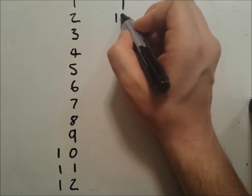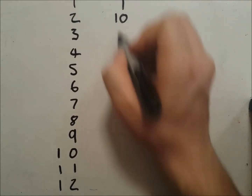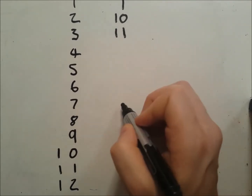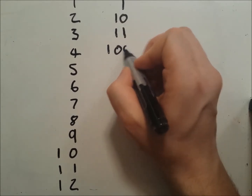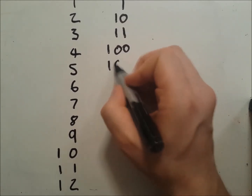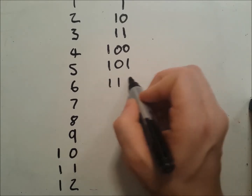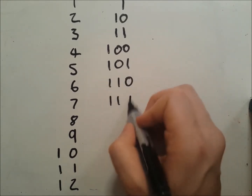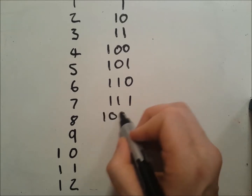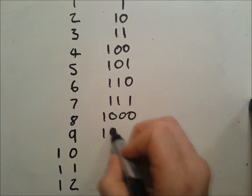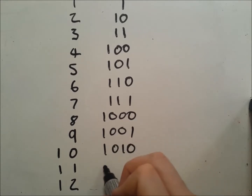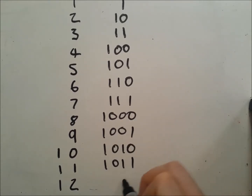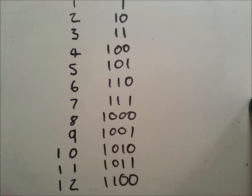So in binary we go: 0, 1, then 1-0, 1-1, 1-0-0, 1-0-1, 1-1-0, 1-1-1, 1-0-0-0 — and it just keeps on going up and up and up.